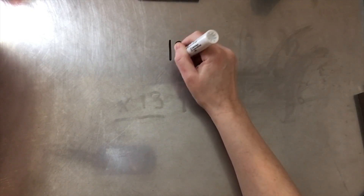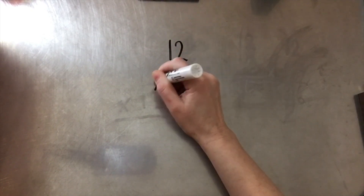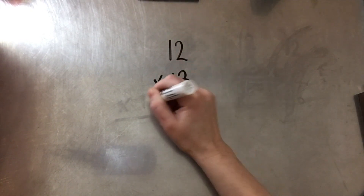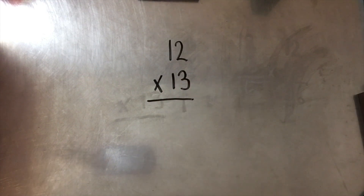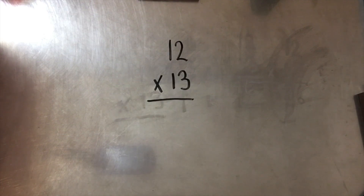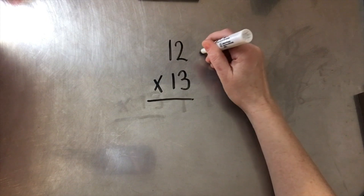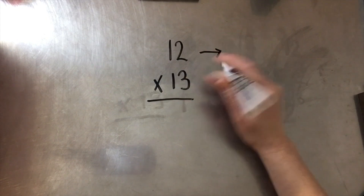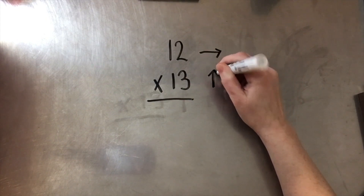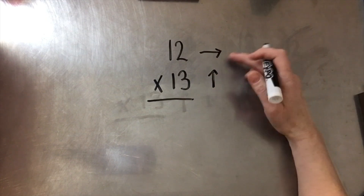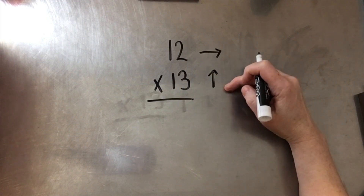We're going to look at 12 times 13. In order to use base-10 blocks to work this problem out, we're going to build a rectangle. When we build rectangles with base-10 blocks for multiplication, we use the first factor as the across distance and the second factor as the up distance. So our rectangle is going to be 12 across and 13 up.